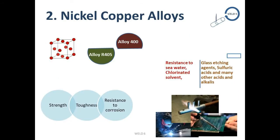Next is nickel-copper alloys. Nickel and copper alloys form a continuous series of solid solutions with face-centered cubic crystal structures. The principal alloys in this group are Alloy 400 and its free-machining version Alloy 405, UNS number N04405. These alloys provide high strength and toughness and are industrially important primarily because of their resistance to corrosion. They have excellent resistance to seawater or brackish water, chlorinated solvents, glass etching agents, sulfuric acid, and many other acids and alkalis.